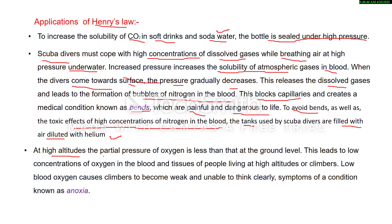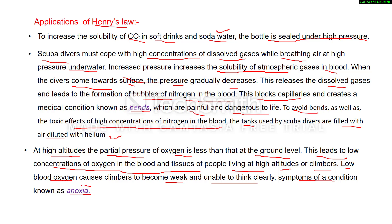At high altitudes, the partial pressure of oxygen is less than at ground level. At higher altitudes the atmospheric pressure is less, which leads to low concentration of oxygen in the blood and tissues of people living at high altitudes or climbers. This low blood oxygen causes climbers to become weak and unable to think clearly. These symptoms are of a condition known as anoxia. So, with the help of Henry's law, we can explain medical conditions like anoxia and bends.